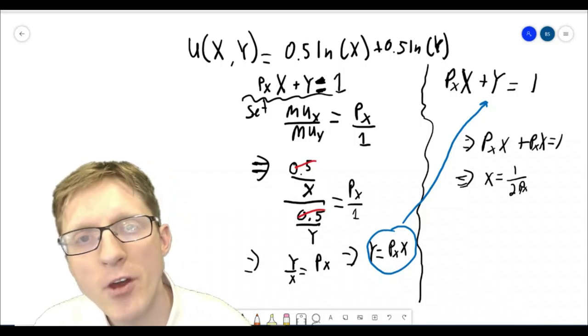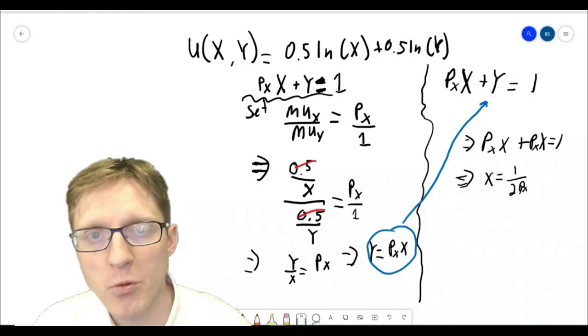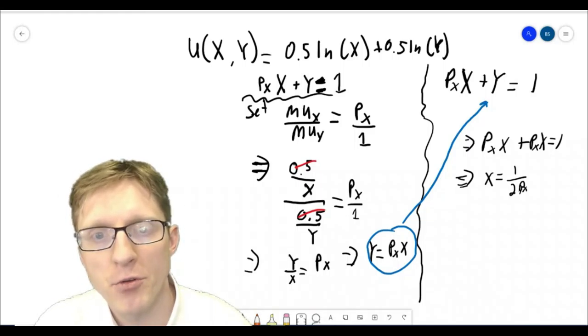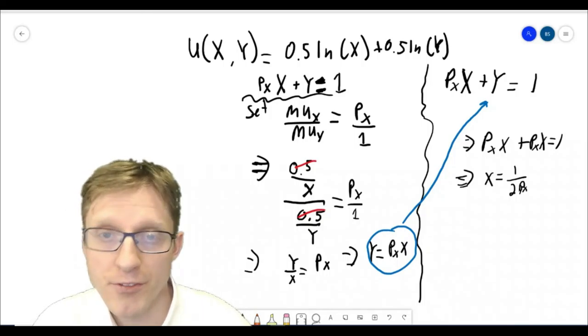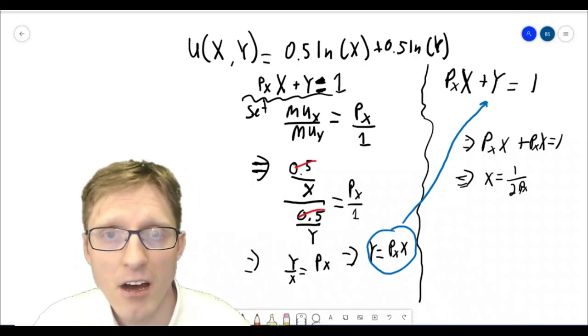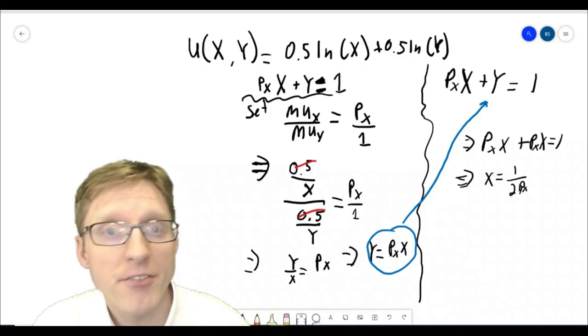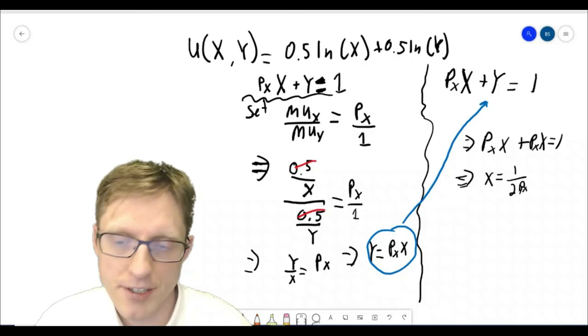Now recall, to get the overall market demand, what you next want to do is you'd want to add up the demands across all the different individuals in the market. Where each individual, if you knew their utility function, you could derive their demand curve individually. And then add them up and you have the overall market demand.